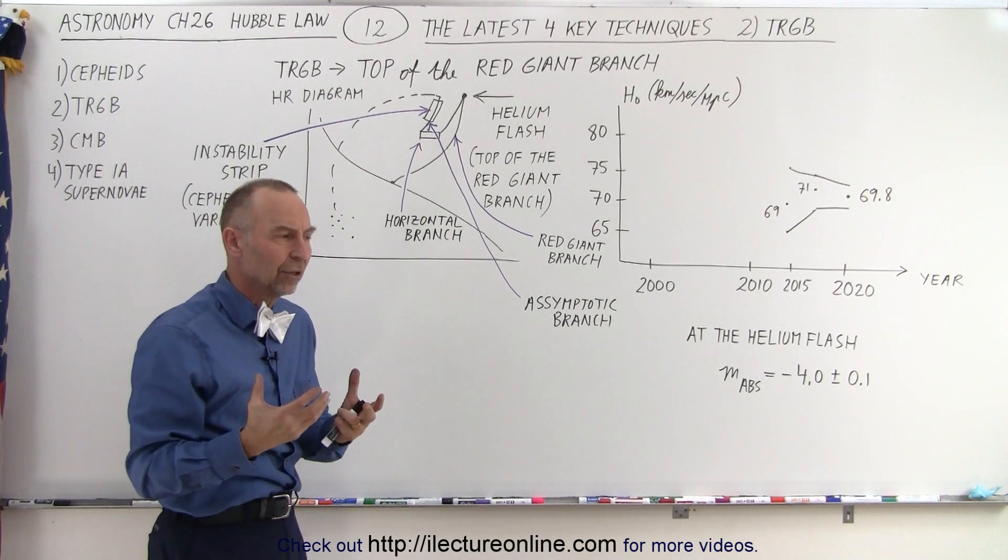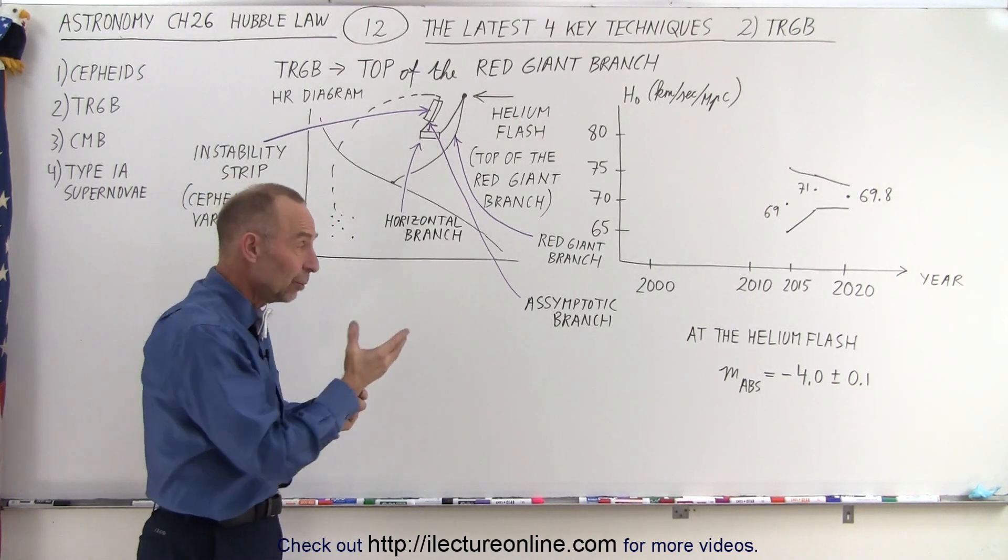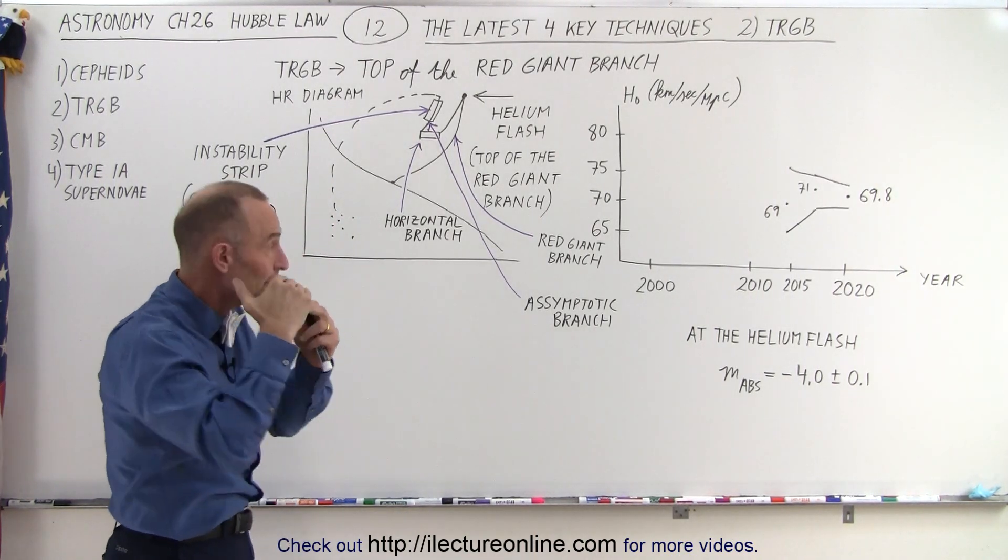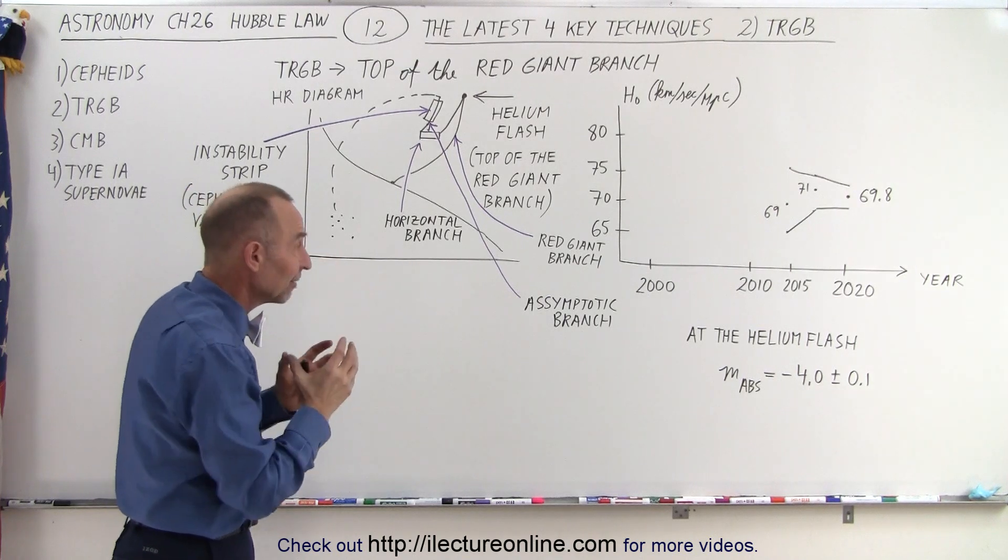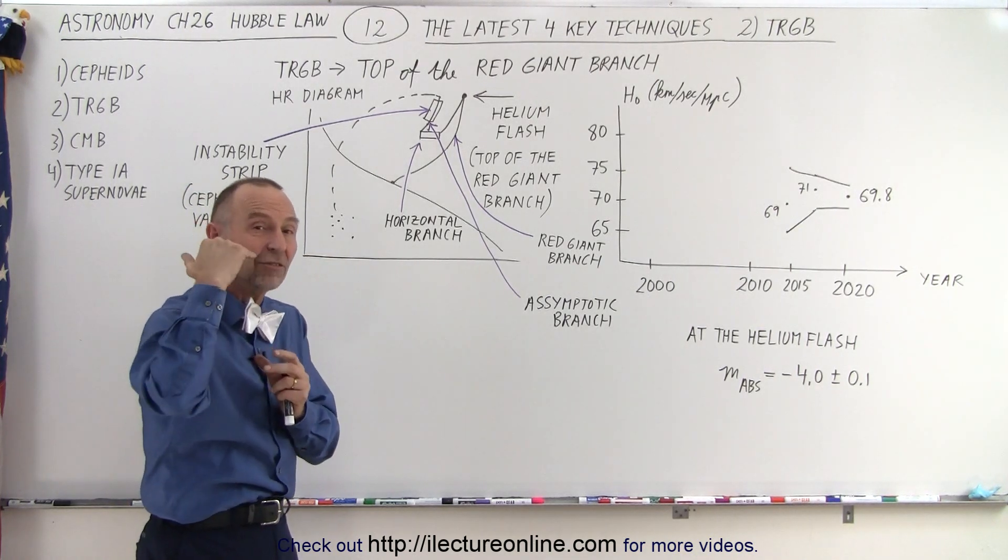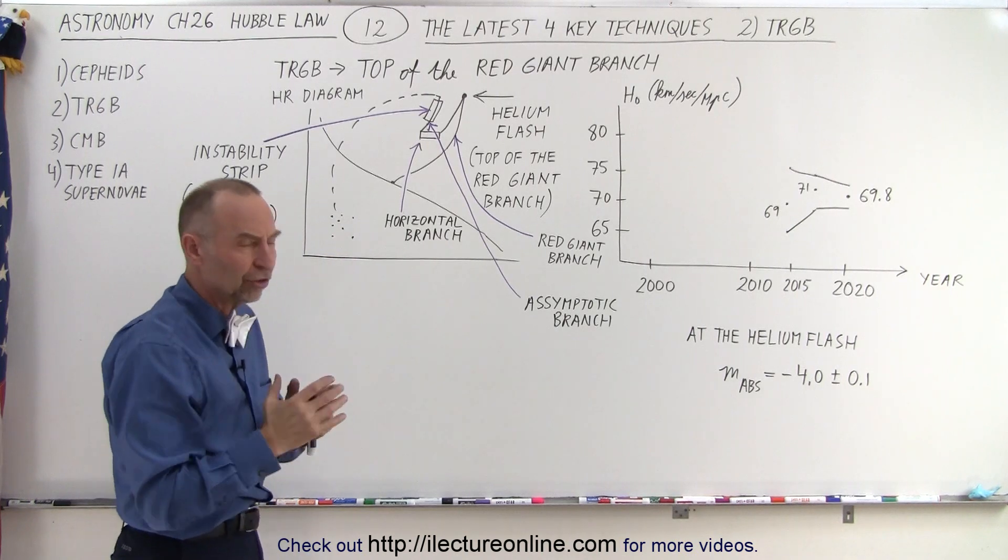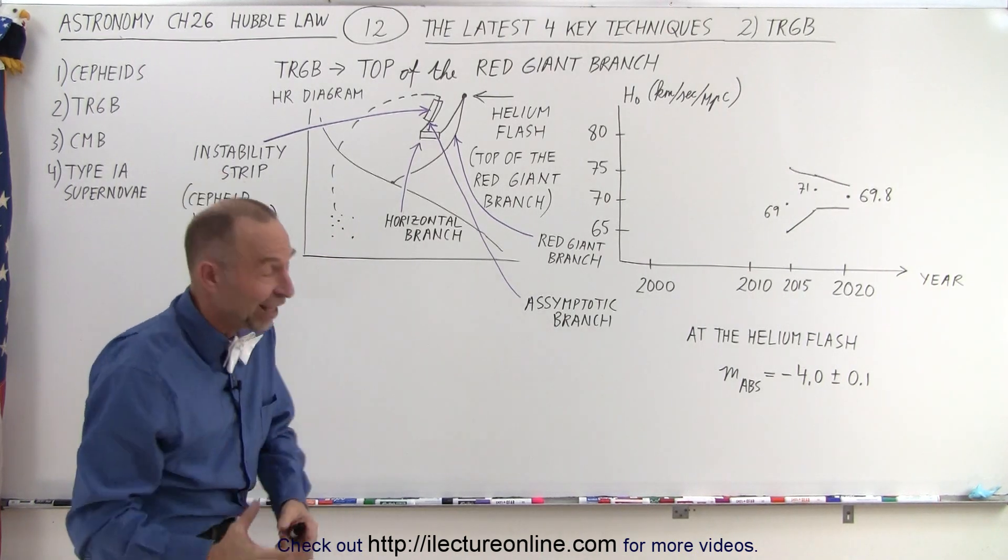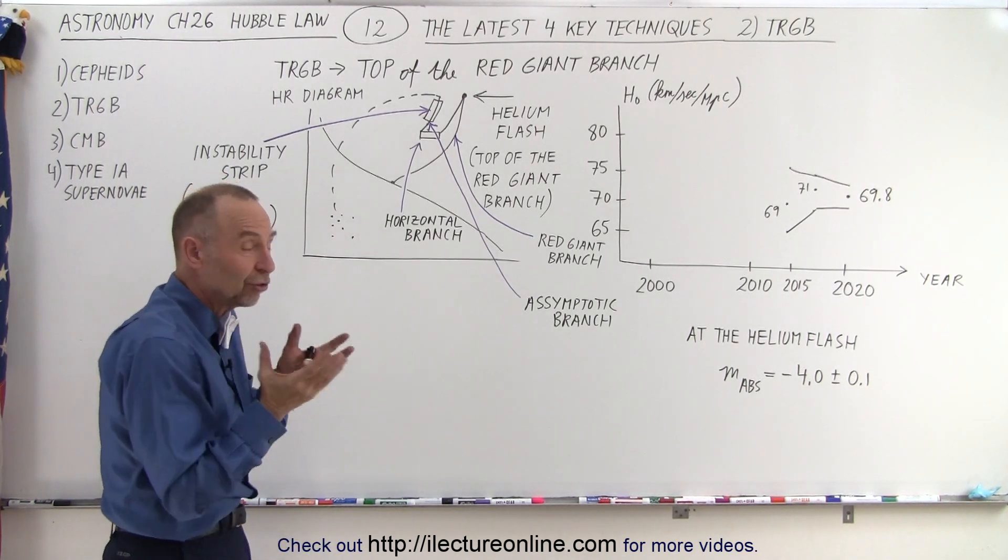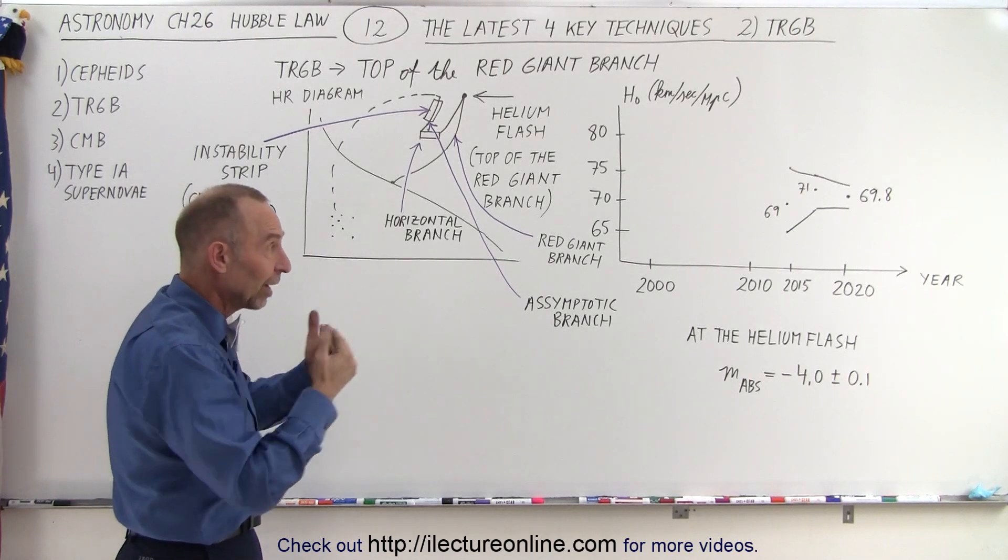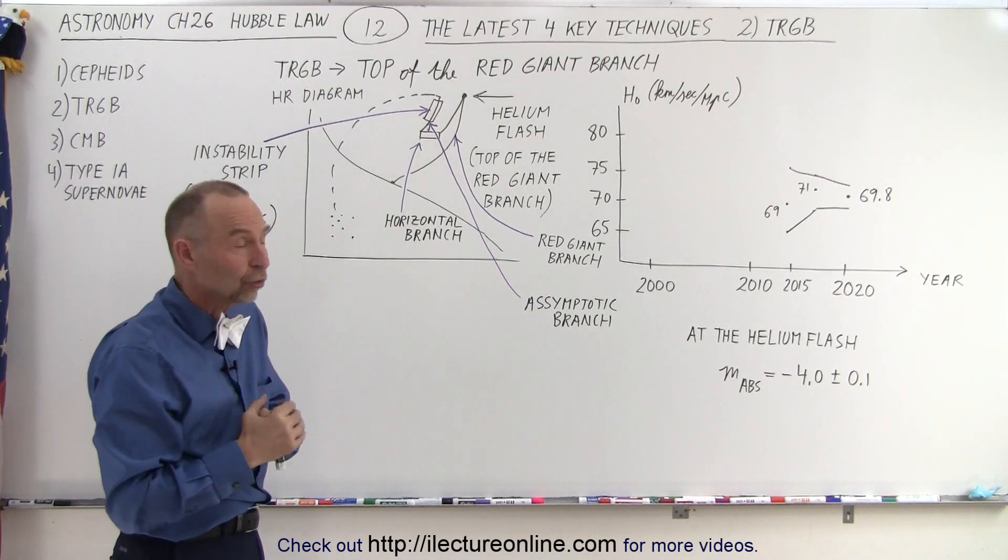We can even see red giants that are at the moment of the helium flash in galaxies that are tens of millions of light years away from us, in such a way that, just like the Cepheid variables, we can try to find the distance to those galaxies.